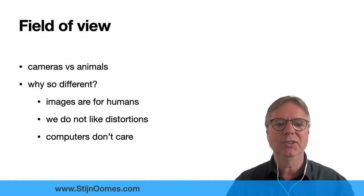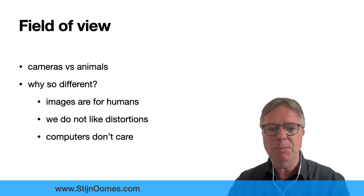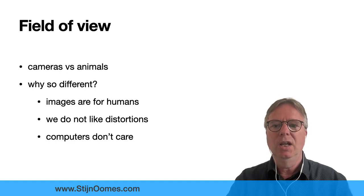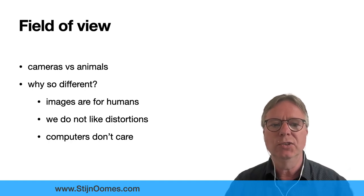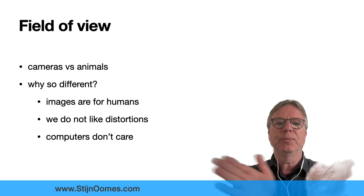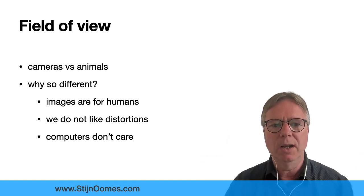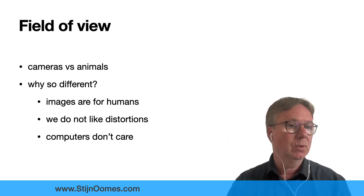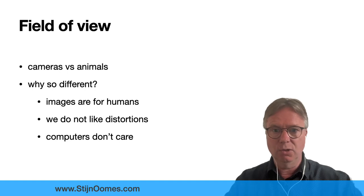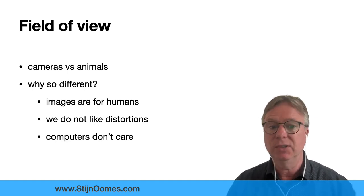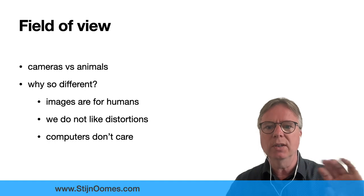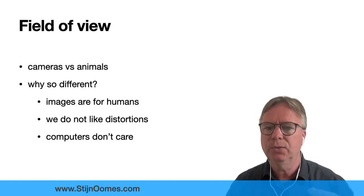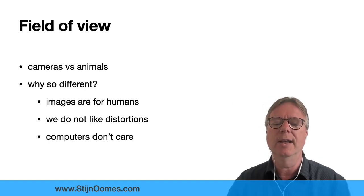Well, those images are not made for the camera - they're made for us, and we do not like those distortions. If you have a wide angle camera and there's lots of round objects or close to round objects in the scene, for example heads of humans, they look so distorted that it's uncomfortable for us. We don't like to look at that.